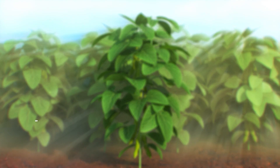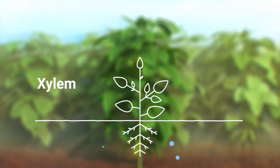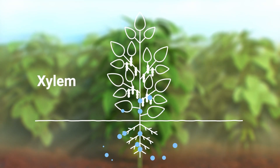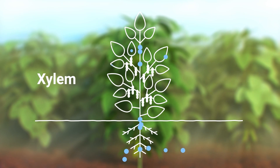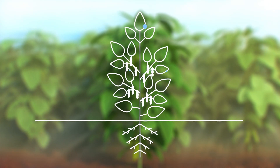This lack of water leads to a suction effect throughout the complete plant all the way down to the roots. The result is that new water is being absorbed into the plant from the soil, just like when you drink from a straw. And this water carries new nutrients to the plant.